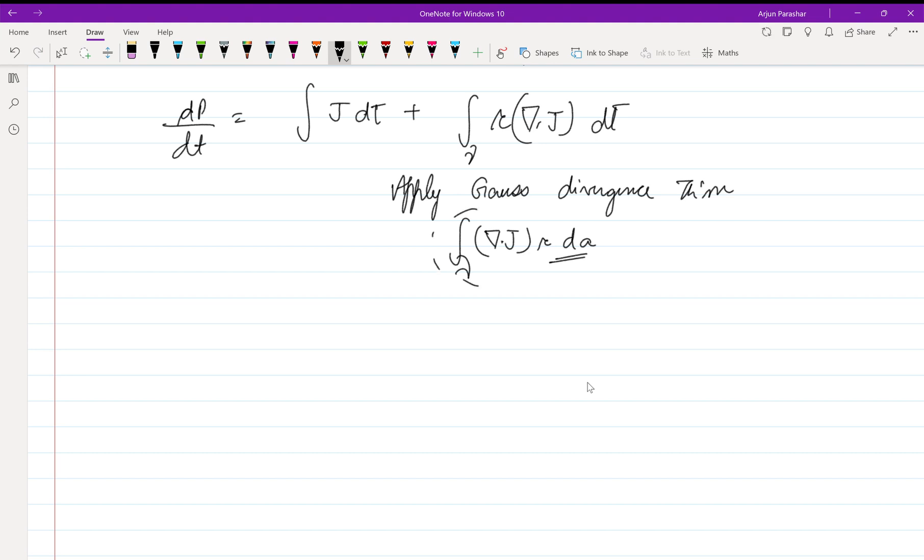J is called the current density in a given volume. But now we have a surface here. So for a surface, j is not included. It means j is inside the volume only, not on the surface.